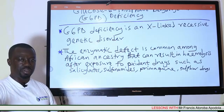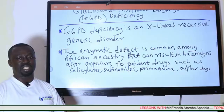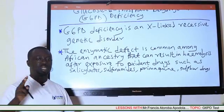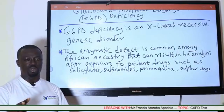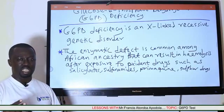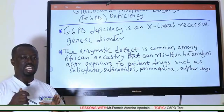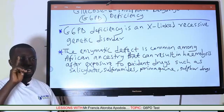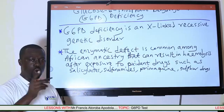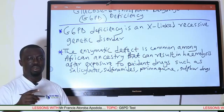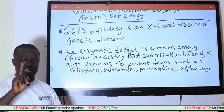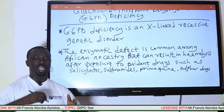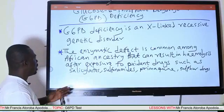Since it is recessive, for the disease to manifest itself, two copies of the genes on both chromosomes must be affected or abnormal for the disease to occur. However, if only one of these two copies of genes on both chromosomes is abnormal, then the individual is said to be a carrier.